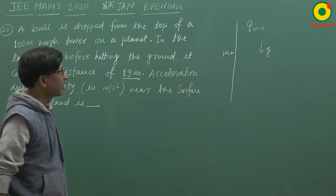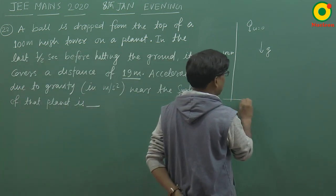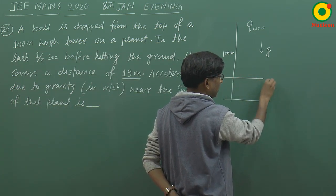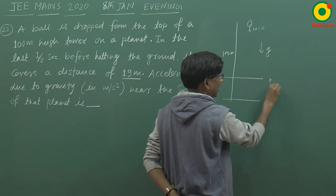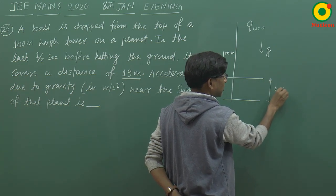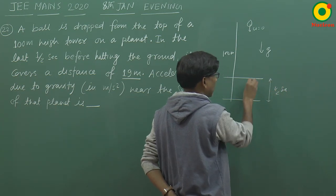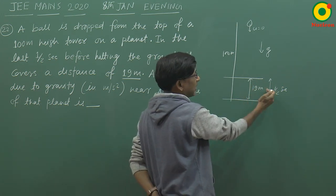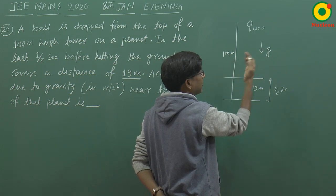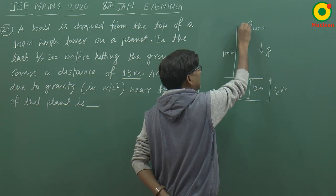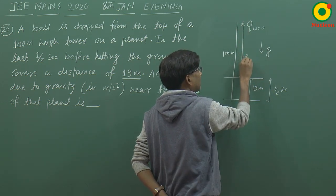इसमें कहा गया कि last के आधे second में — सपोज यह जो आधे second का time है यहाँ से यहाँ तक — तो यहाँ पर 19 meter का distance travel करता है। इसका मतलब इस आधे second से पहले इसने 81 meter का distance travel किया होगा।